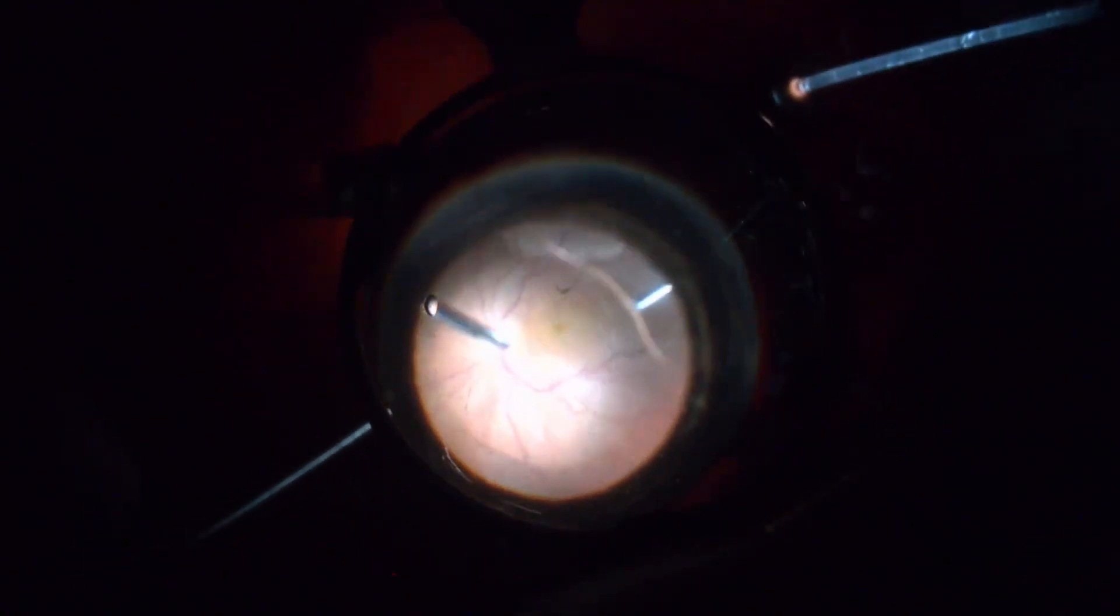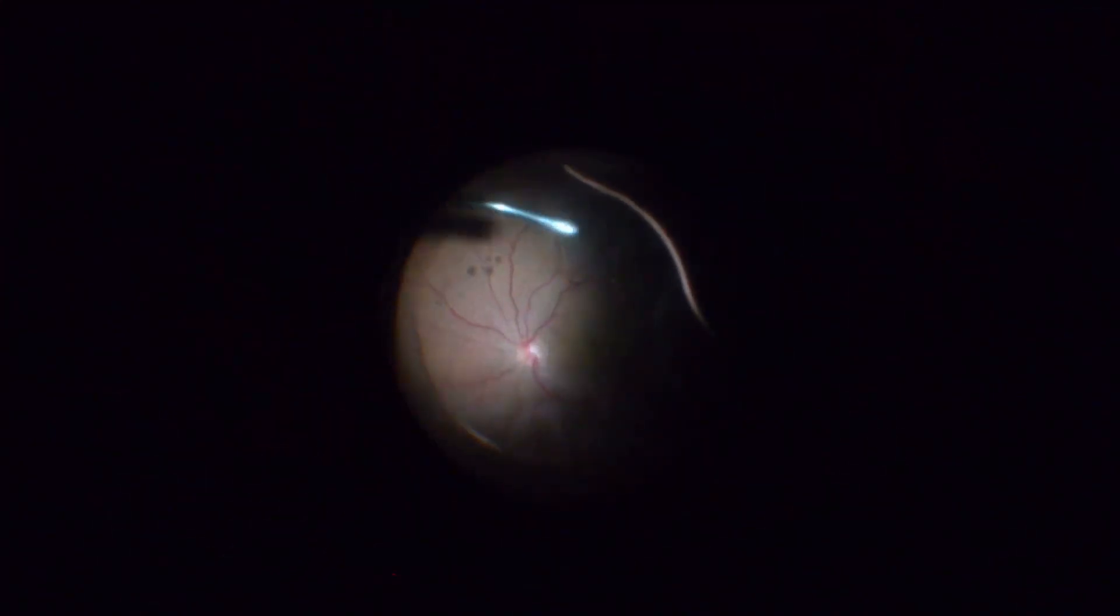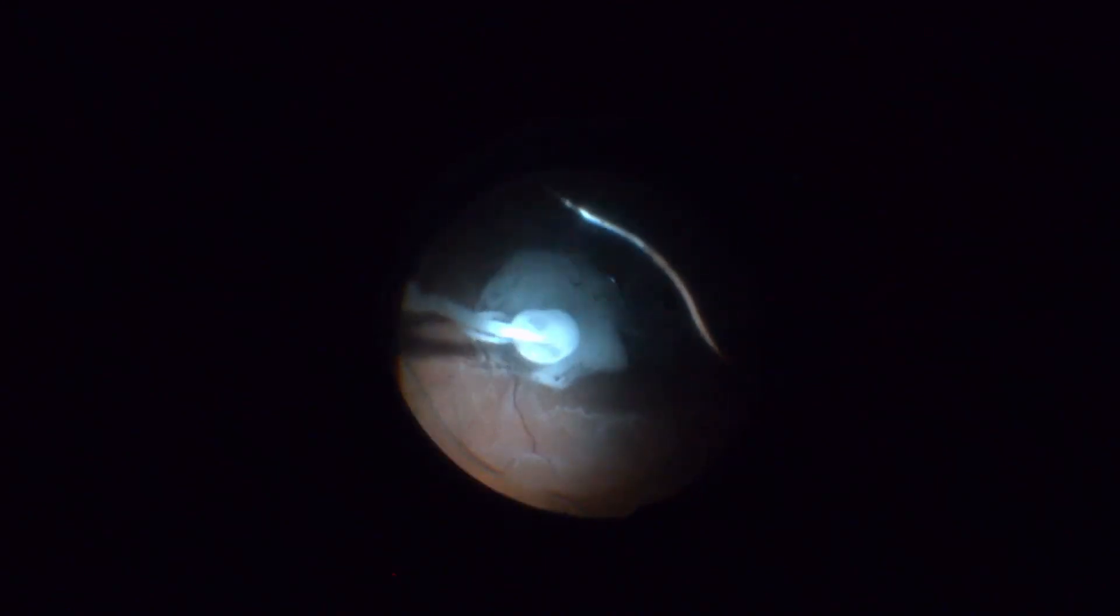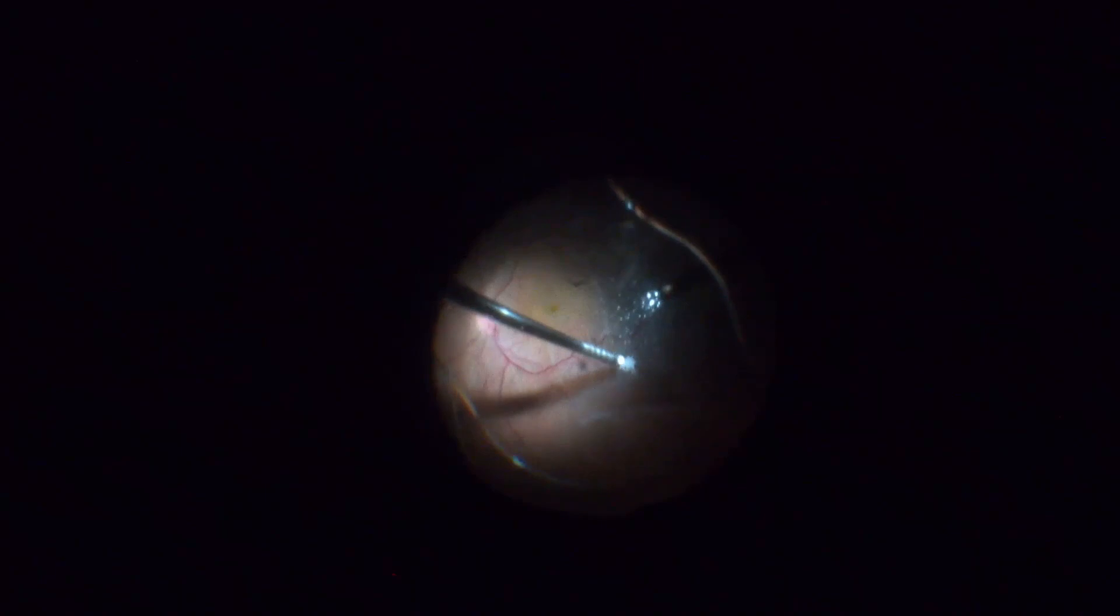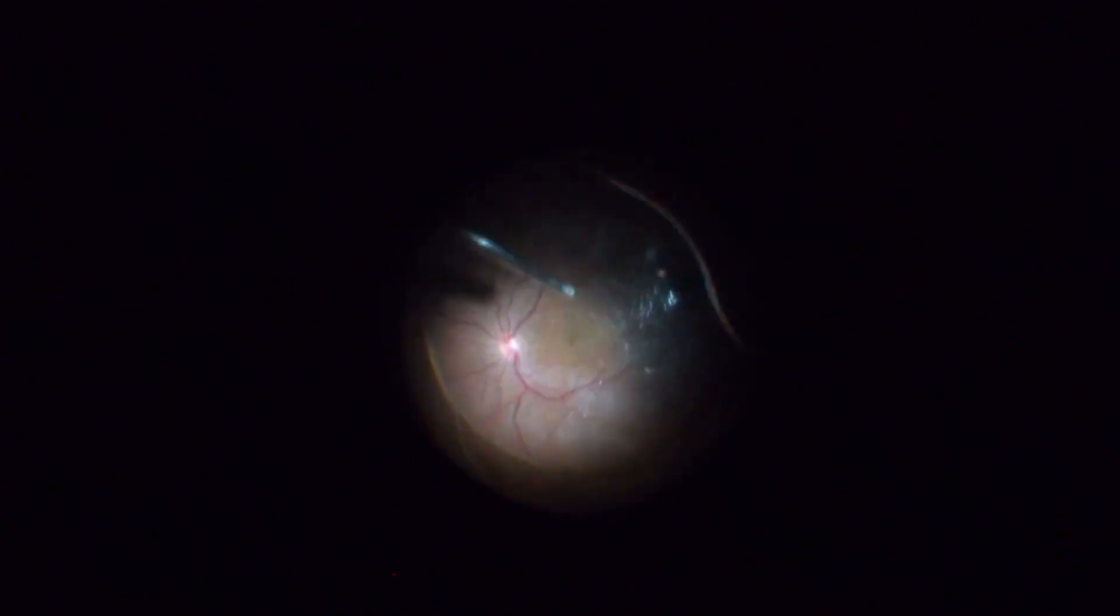Core and peripheral vitrectomy. To assess the vitreous status, triamcinolone acetonide is injected and despite low settings, an iatrogenic retinal tear is created with the vitreous probe.